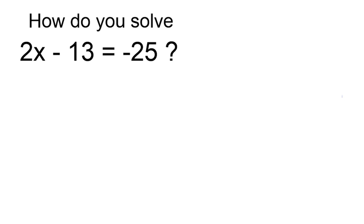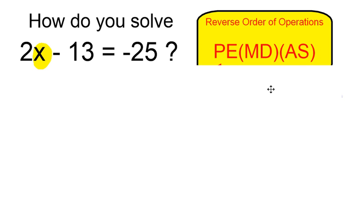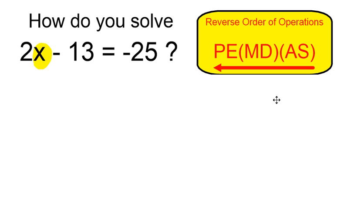To solve an equation like this means we're going to get x by itself, find out what x is, by undoing all other operations using our reverse order of operations. So we're going to undo in a reverse order than we would do our operations normally.